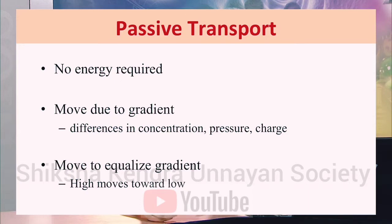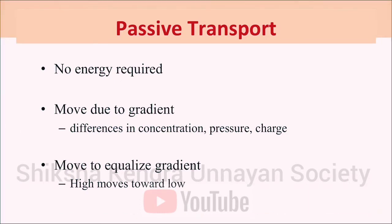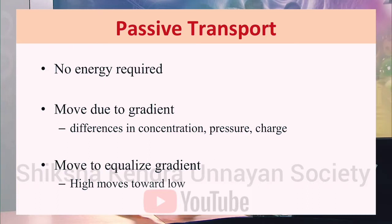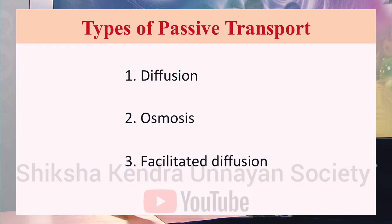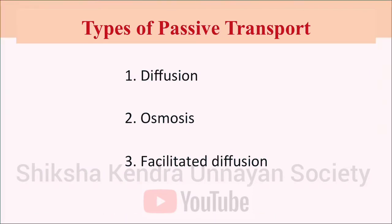Passive transport is the process where no energy is required and molecules move according to the gradient — that is, according to differences in concentration, pressure, or charge. Molecules move to equalize the gradient, moving toward lower concentration until equilibrium is reached. Passive transport is basically of three types: diffusion, osmosis, and facilitated diffusion.